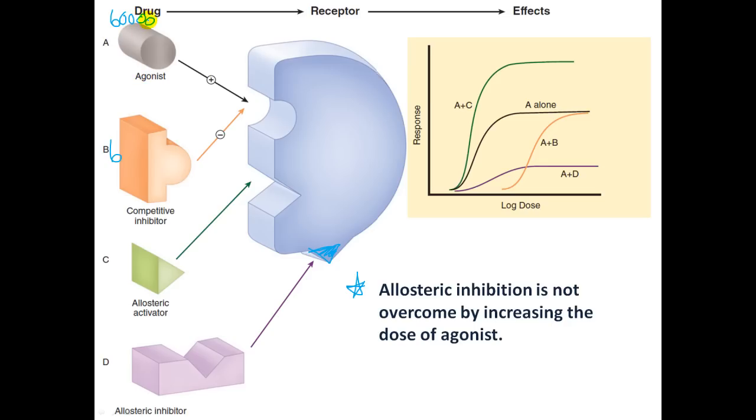adding two zeros to that, so we've got 60,000 of these agonists, it's still not going to overcome this allosteric inhibitor because this allosteric inhibitor is bound to a different site and is causing a change in this receptor here.